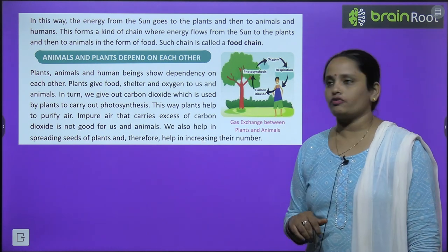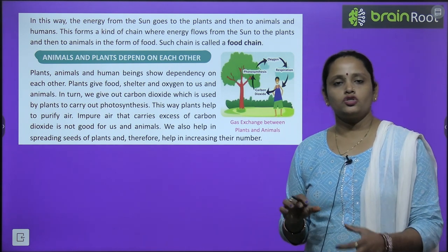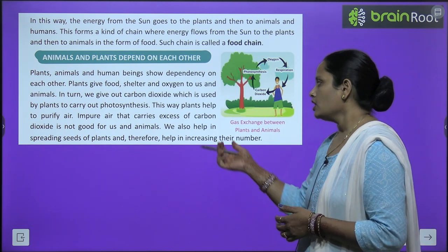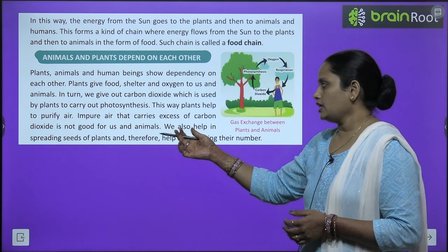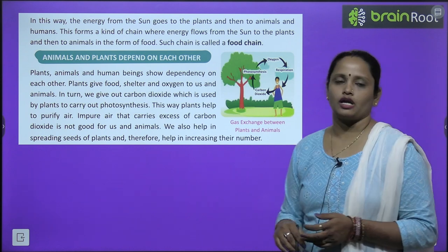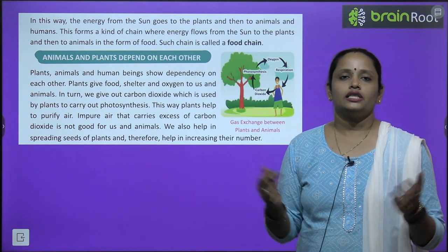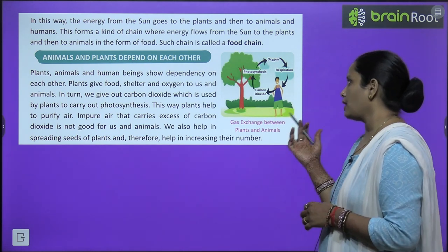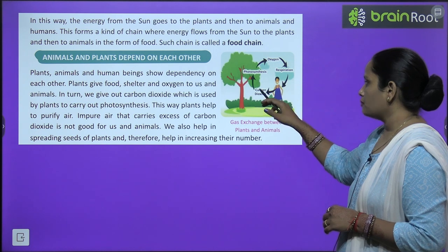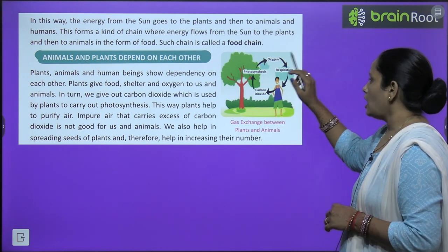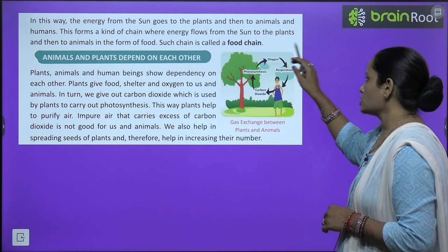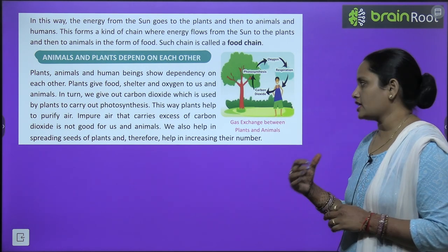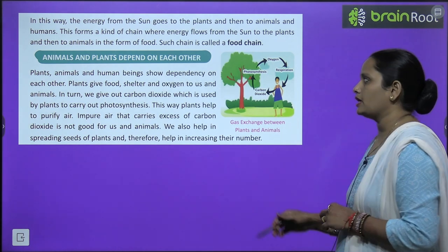Impure air that carries excess carbon dioxide is not good for us or animals. We also help in spreading seeds of plants and therefore help in increasing their number. So animals and plants are both interdependent. Photosynthesis by plants requires carbon dioxide which we provide; after photosynthesis plants release oxygen which we use in respiration; then we release carbon dioxide again which plants take in — this is the gas exchange between plants and animals.